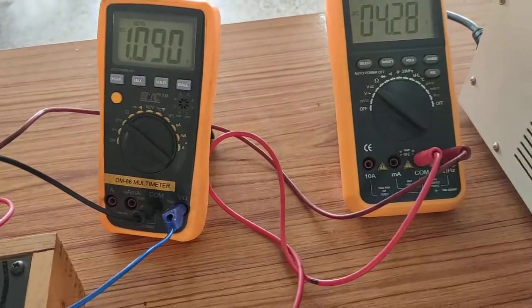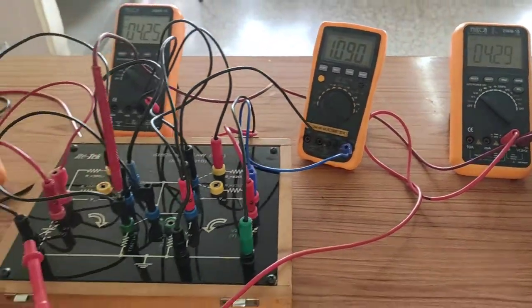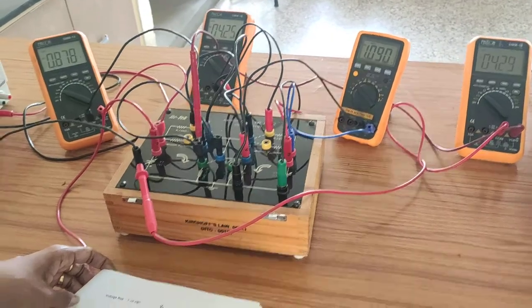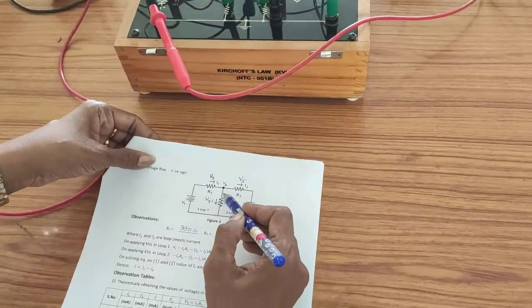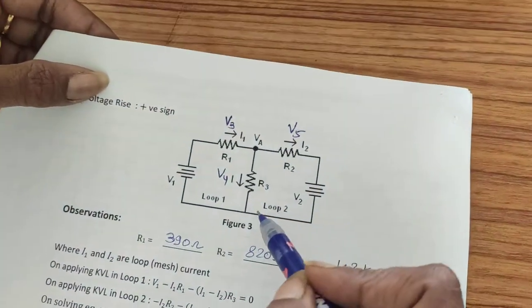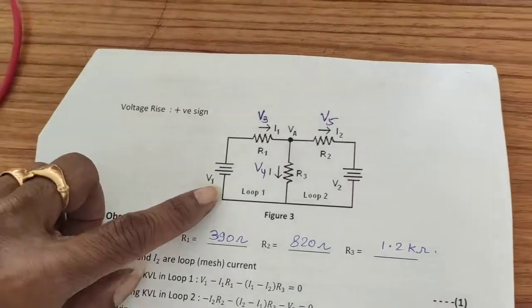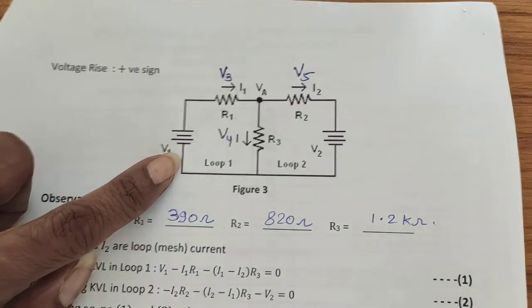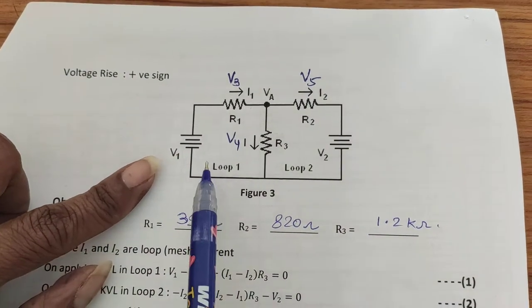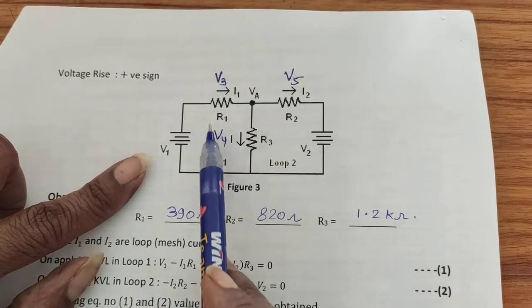Three multimeters are required for the measurement of voltage drop across the resistances and the fourth one is for nodal voltage measurement. This is the circuit we are considering. Here we are going to verify KVL in these two loops.